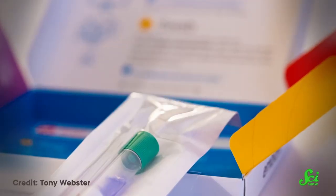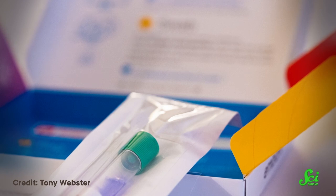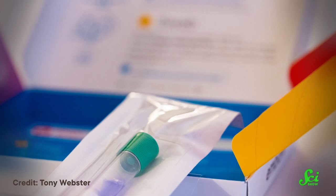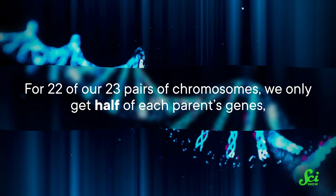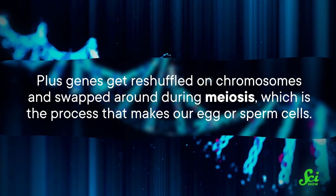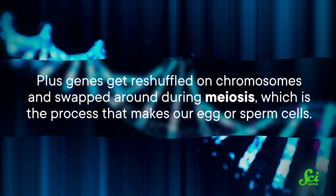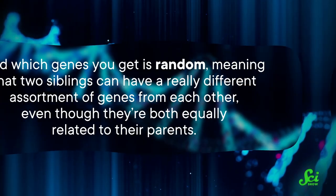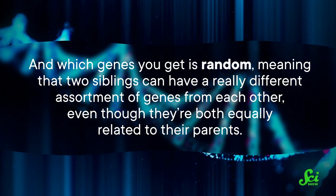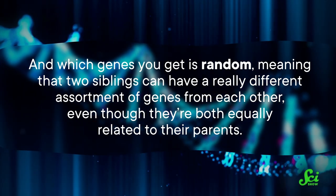In the era of DNA ancestry tests telling us that we're 2% Sri Lankan or 3% Scandinavian, you'd think we could just use genetics to reveal who our most recent common ancestor is, and where or when they lived. But it's actually really hard to trace your ancestry that far back using genetics alone, because of how you inherited those genes. For 22 of our 23 pairs of chromosomes, we only get half of each parent's genes, plus genes get reshuffled on chromosomes and swapped around during meiosis — the process that makes our egg or sperm cells. And which genes you get is random, meaning that two siblings can have a really different assortment of genes from each other, even though they're both equally related to their parents.